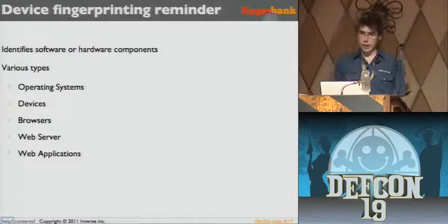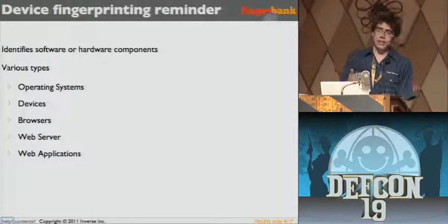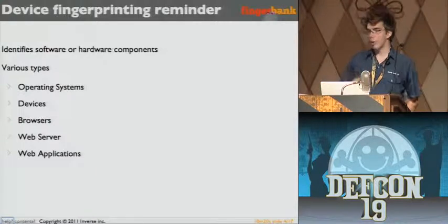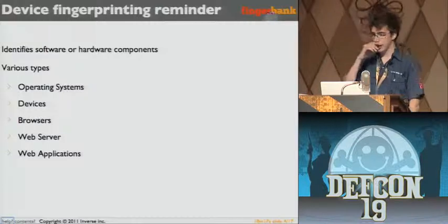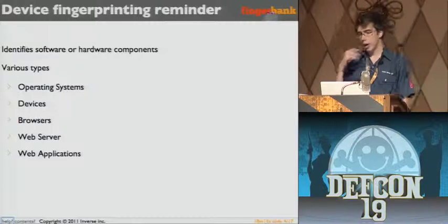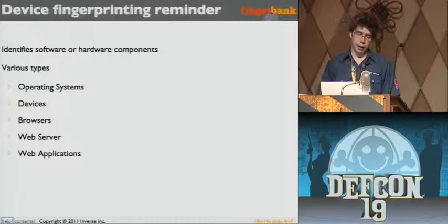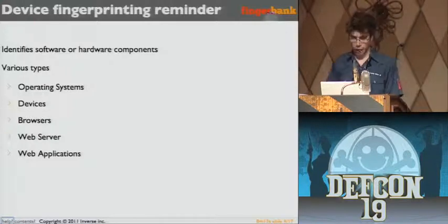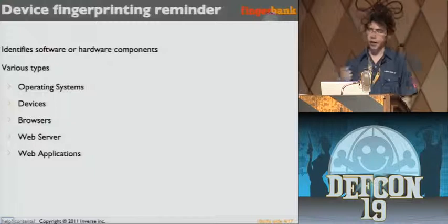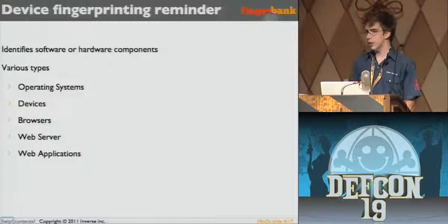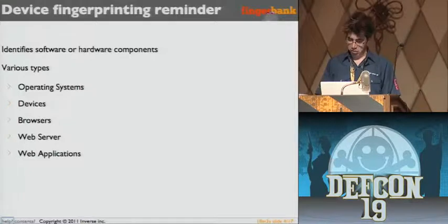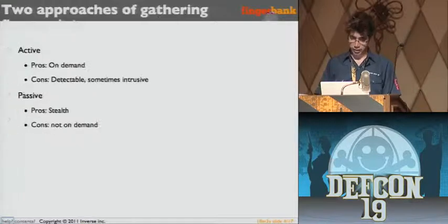Device fingerprinting — what it does is it identifies pieces of your software or hardware. You're probably familiar with p0f and stuff like that. There are various types: operating systems, devices, browser, web server, web application. It's another type of signature, more or less.